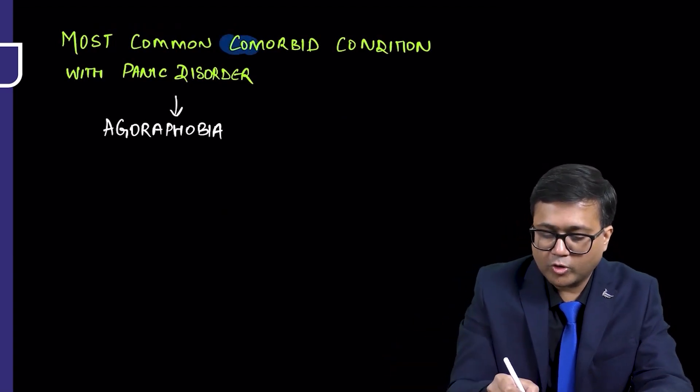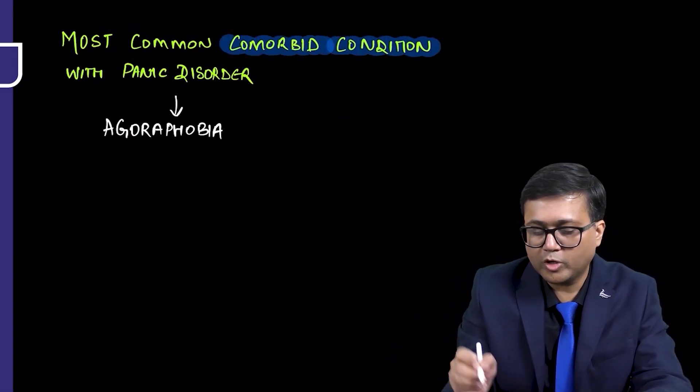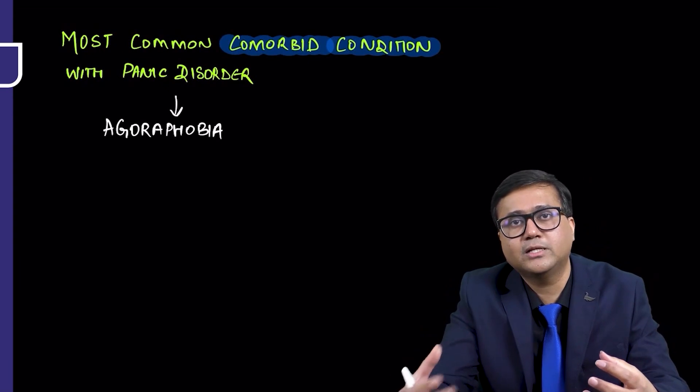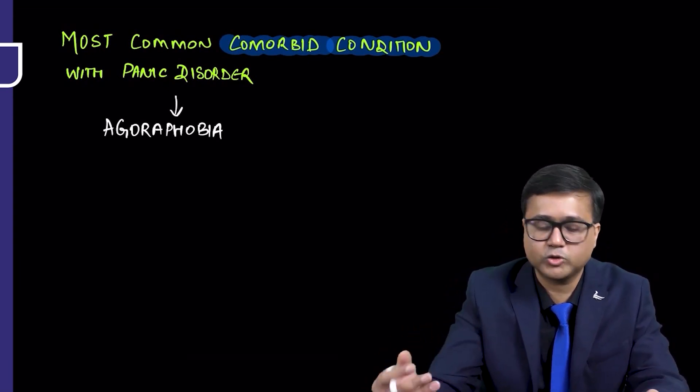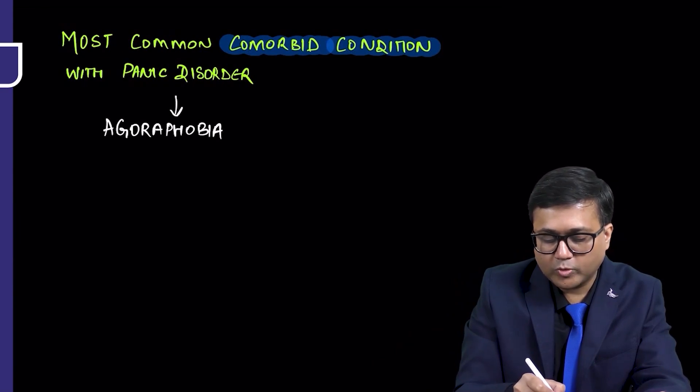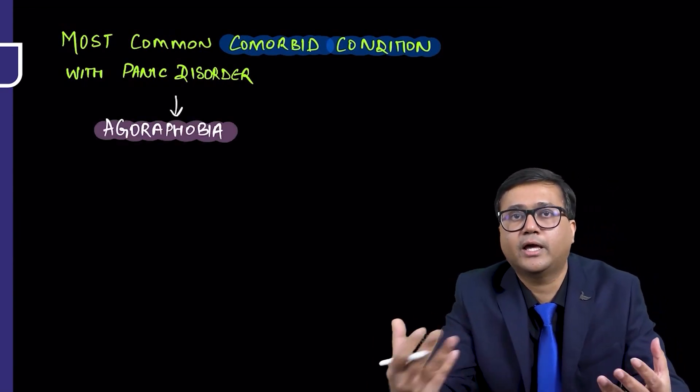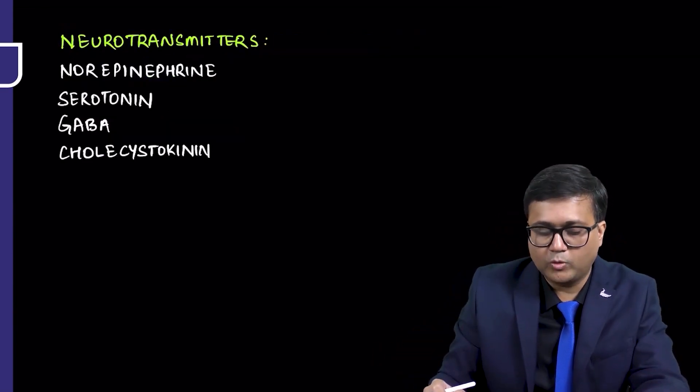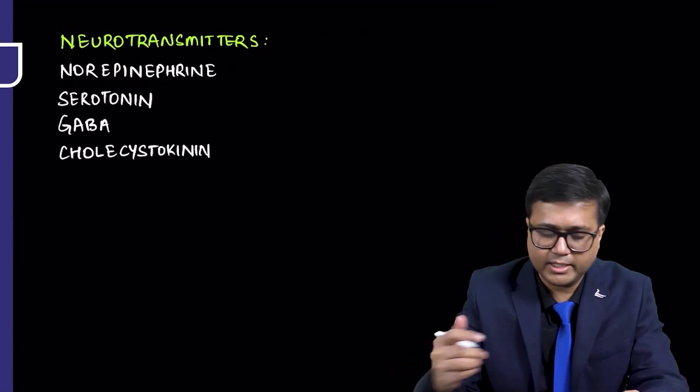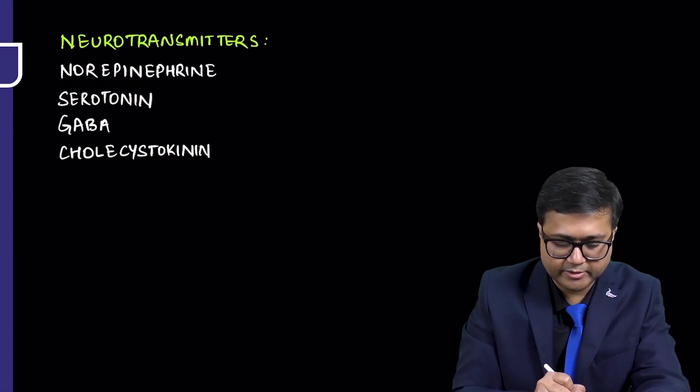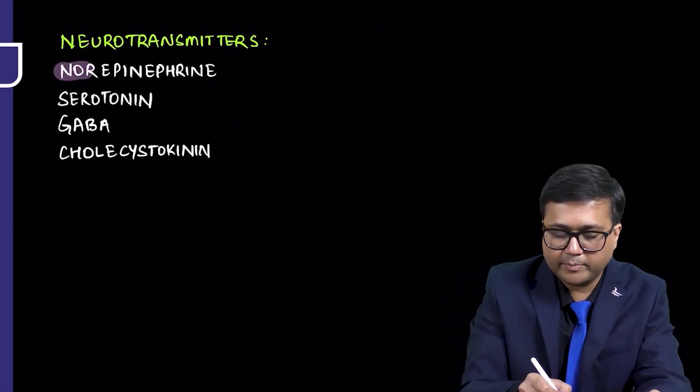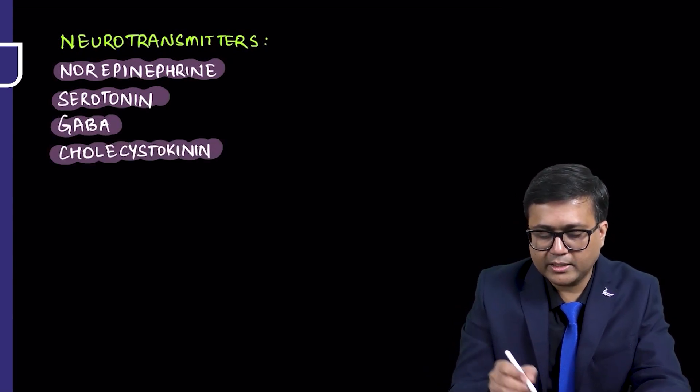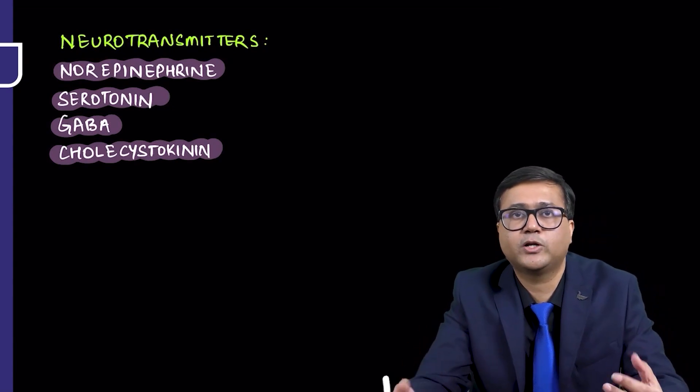The most common comorbidity or most common comorbid condition with panic disorder is that many times patient with panic disorder may also have some other psychiatric illnesses. And it is seen that with panic disorder, the most common comorbidity is agoraphobia. Coming to the etiology, there are certain important neurotransmitters which are implicated for the development of panic disorders like norepinephrine, serotonin, GABA, and also more recently cholecystokinin has been implicated.